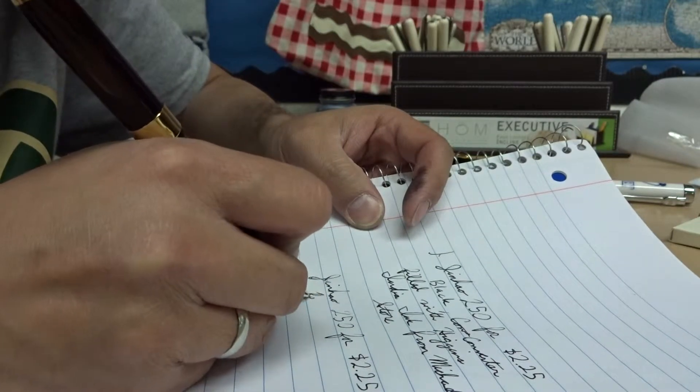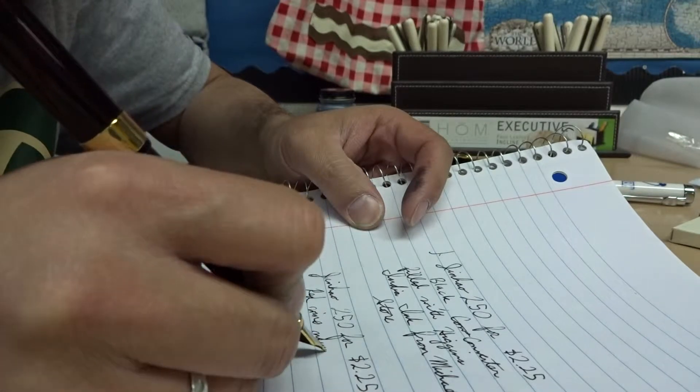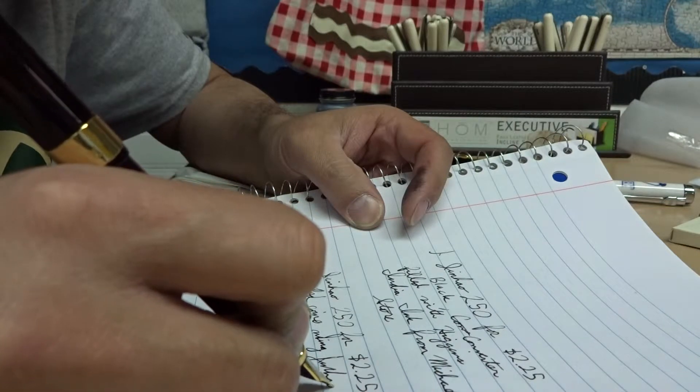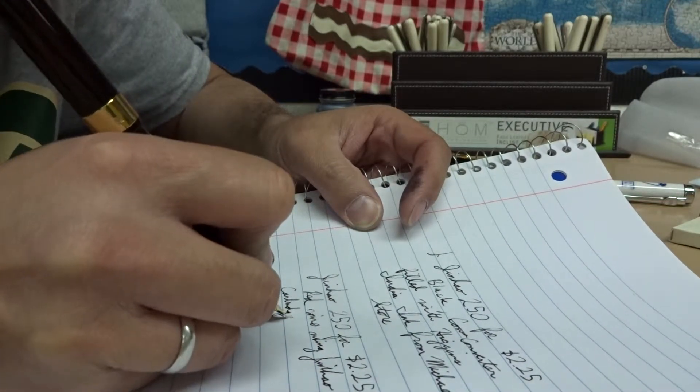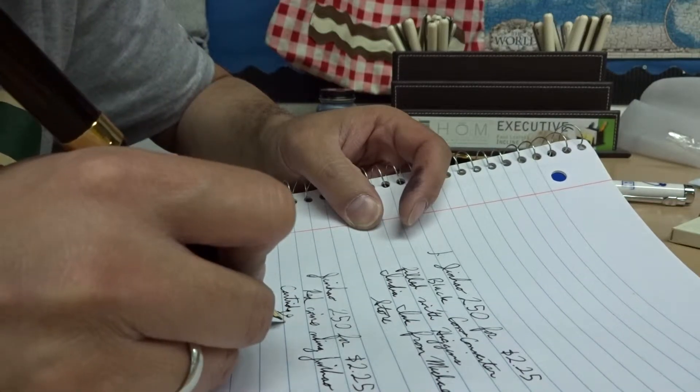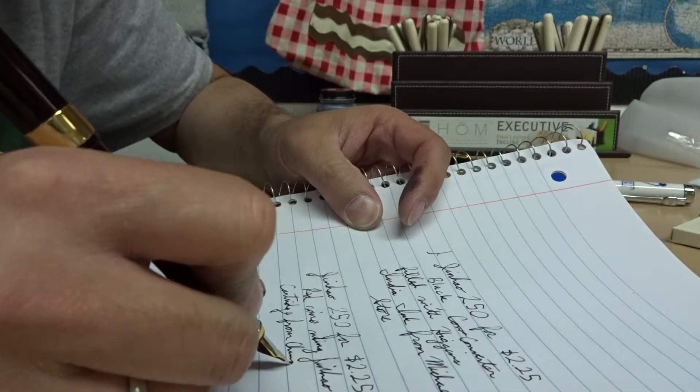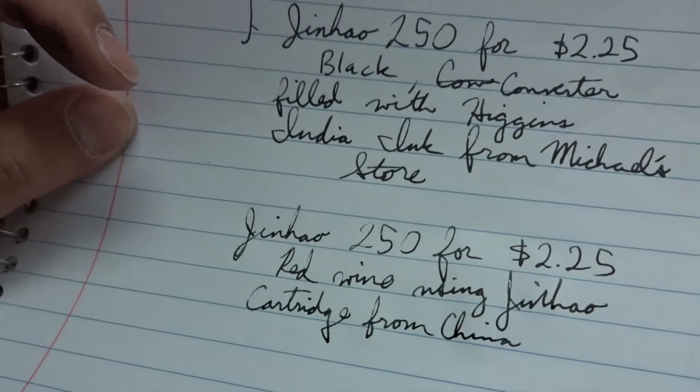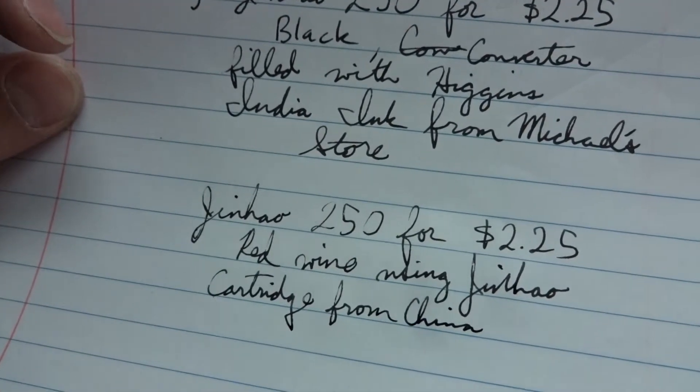And this is the red wine using - my penmanship is really bad right now - Jin Hao cartridge from China. And you'll see that the two different pens both work similarly.